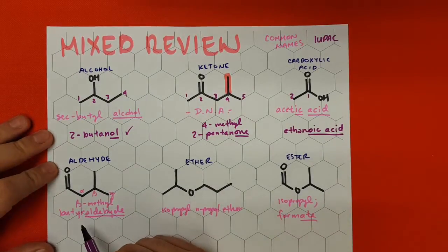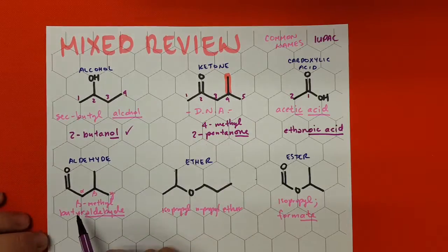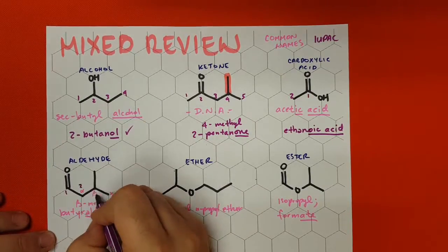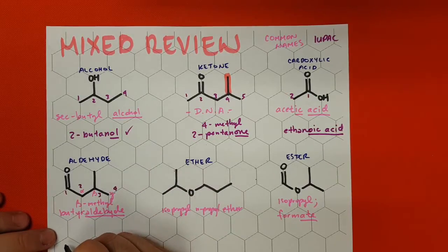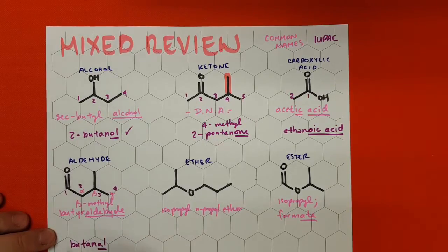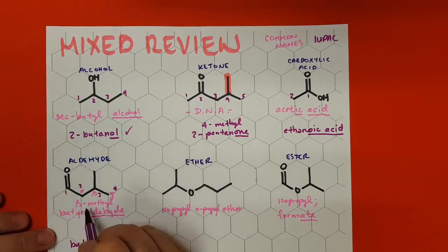For the aldehyde, it's really easy. We count: one, two, three, four for both chains. We write 'butane' but without the E at the end, because it gets substituted by '-al.' No numbers are needed because the carbonyl is always on the edge. Then at number three we have a methyl group, so the full IUPAC name is 3-methylbutanal.